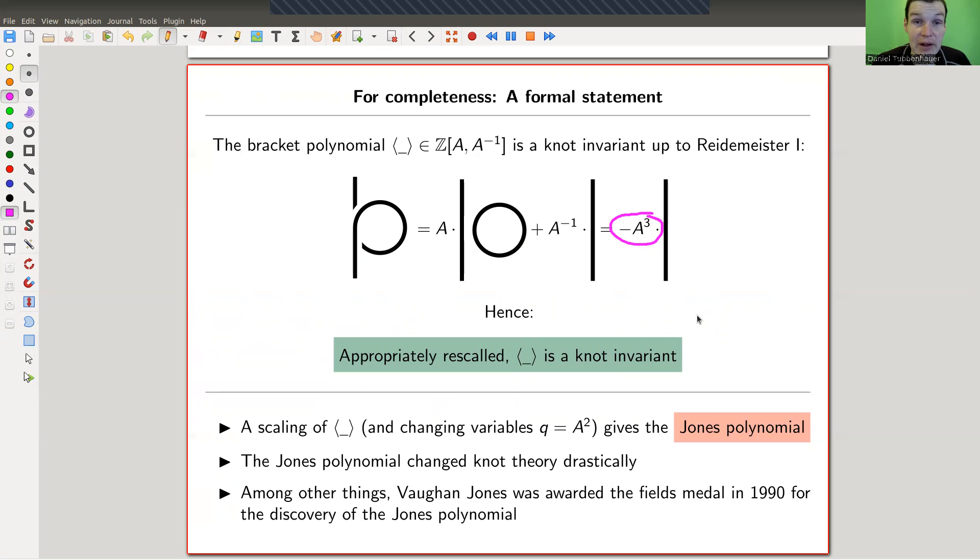And the statement is pretty cool. Up to the stupid first Reidemeister move, which is not quite an invariant, it's an invariant up to a stupid scalar that you scale out. Up to that, the bracket polynomial is a knot invariant. It is a polynomial with integer coefficients in A and A inverse. And up to scaling, it's the well-known Jones polynomial. So we can take this as a definition of the Jones polynomial.